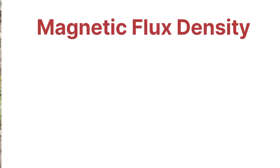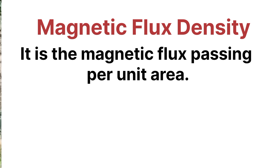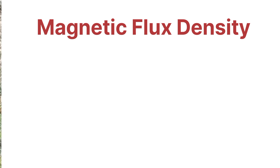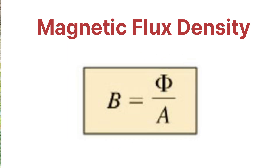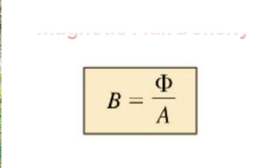Magnetic flux density is nothing but the magnetic flux passing per unit area — that is called the magnetic flux density. Magnetic flux density is generally denoted as B, and it is equal to flux per unit area, that is phi (φ) per area. This is the magnetic flux density formula and its denotation.